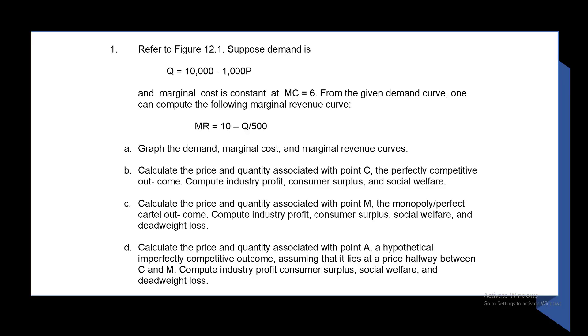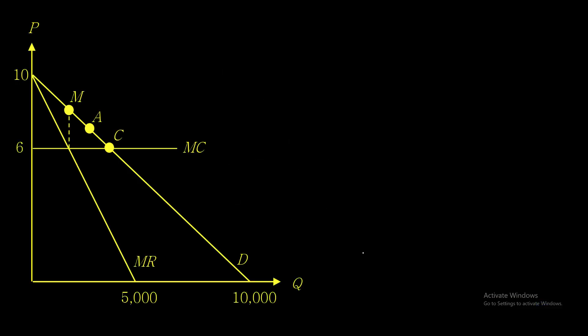Now we come back to the question. Part A says: graph the demand curve, marginal cost, and marginal revenue curves — so you have 3 curves to graph. I'm going to use this nice graph that we have here. This is your demand curve, this is your marginal revenue curve, and this is your marginal cost curve. When plotting these curves, the demand curve and the marginal revenue curve — you should set quantity equal to 0 so that you know where it intersects with the price axis.